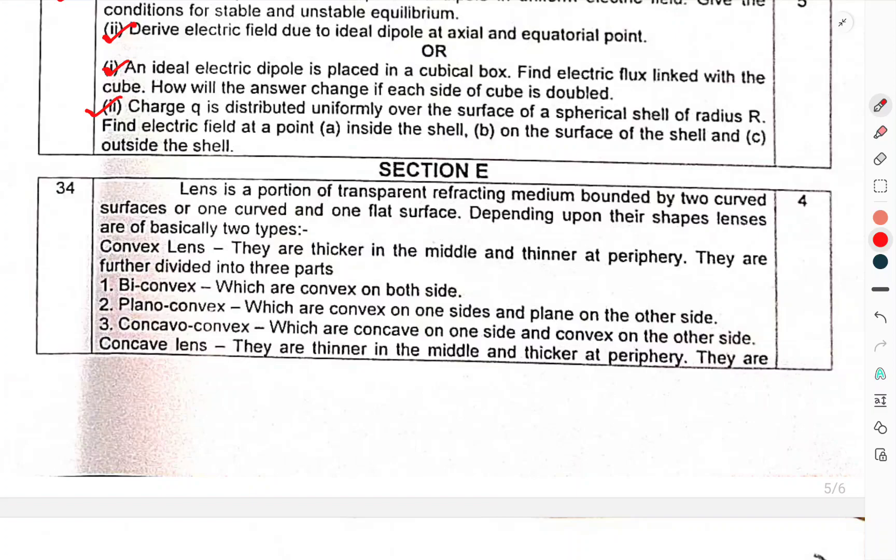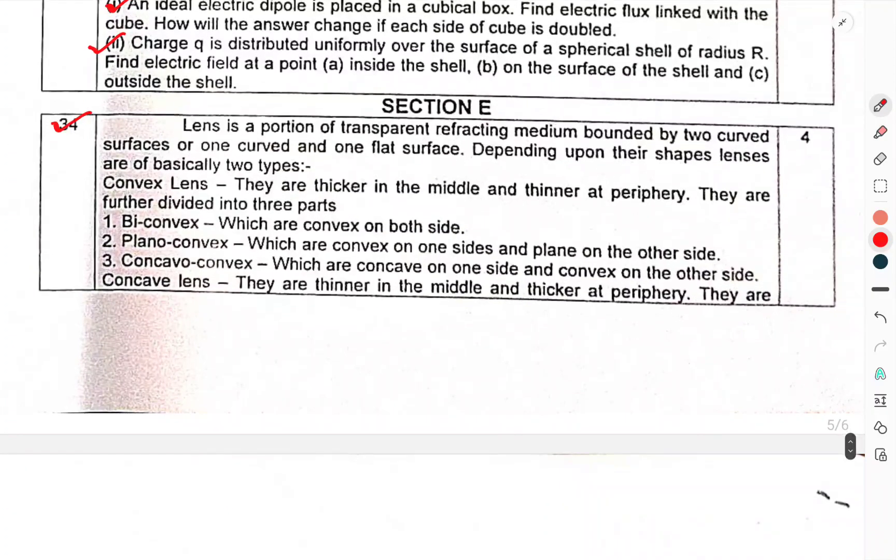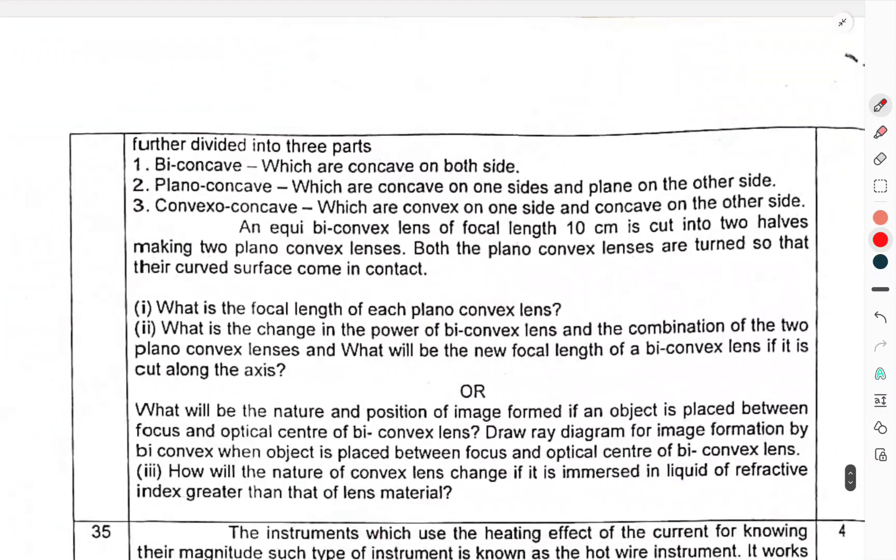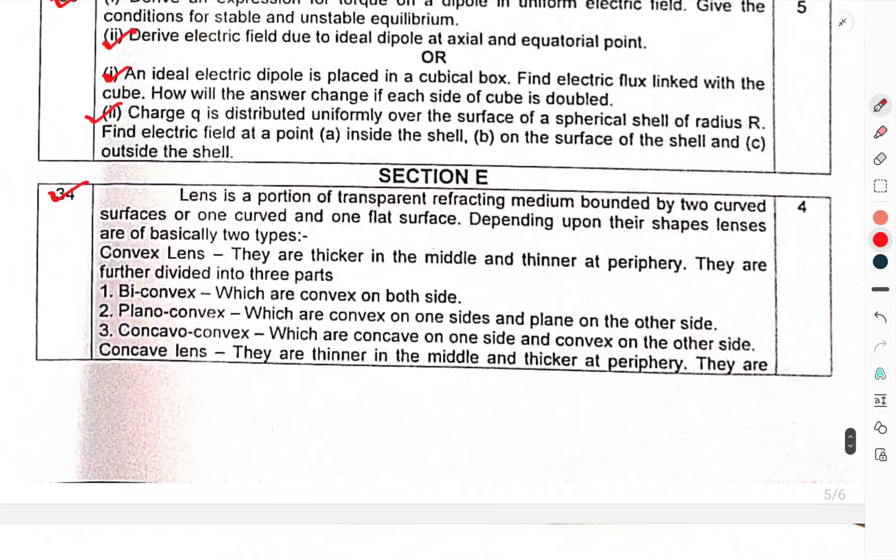Now we have come to section E. Lens is a portion of transparent refractive medium bounded by two curved surfaces or one curved and one flat surface. Depending upon their shapes, lenses are basically two types: convex lens, further divided into bi-convex, plano-convex and concavo-convex. This is basically a case study question.